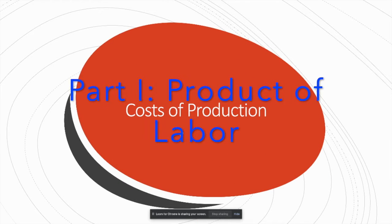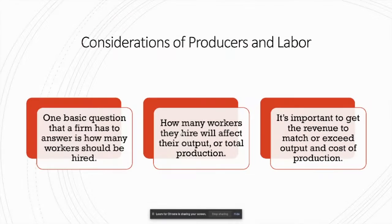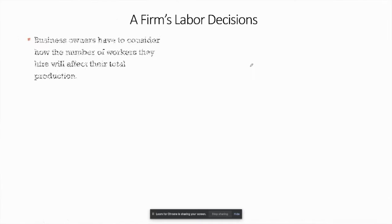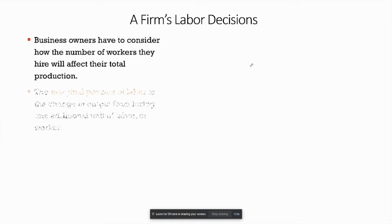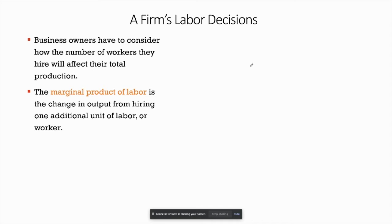In this video we're going to be talking about cost of production — everything that goes into producing a product that a firm has to consider in order to make production decisions. How much should a firm make to maximize profit? A key question is how many workers should be hired, because the number of workers can make or break a production line. Business owners need to think about the marginal product of labor — how many workers will be the most efficient formula to produce their product and keep costs low.